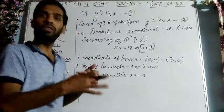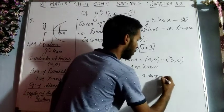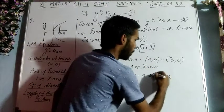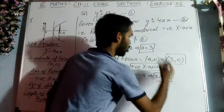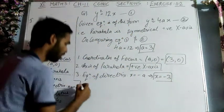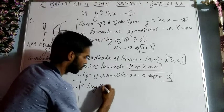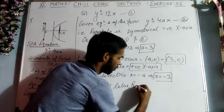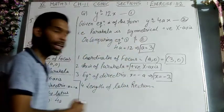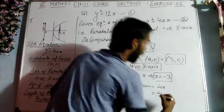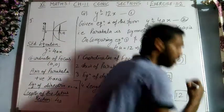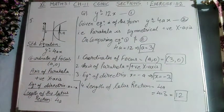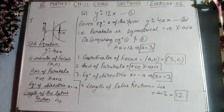You can box these answers separately. Lastly, the length of the latus rectum is 4a. So 4 × 3 = 12. The length of the latus rectum is 12 units. This is the complete answer for the very first question of exercise 11.2.